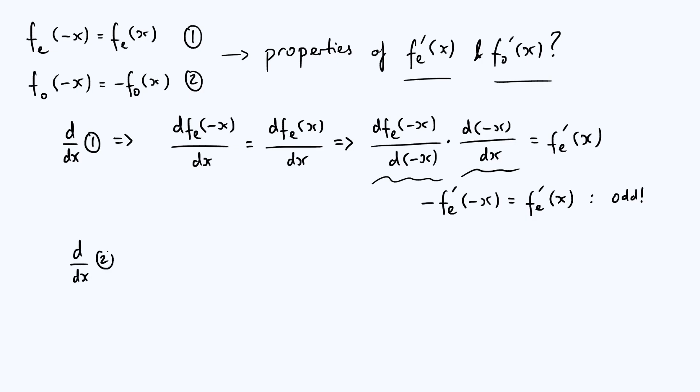So we differentiate equation 2 this time with respect to x. Then you get dfo of minus x by dx is just minus dfo of x by dx. Only difference is we've got this minus sign from the definition of the odd function. Then we apply the chain rule again, because we want to be differentiating the left hand side with respect to minus x. So you get dfo of minus x by d minus x. Again, you have to times by this d minus x by dx term, which we know from what we said before is just minus 1. So let's just write it as minus 1. The right hand side of our equation is minus fo dash of x.